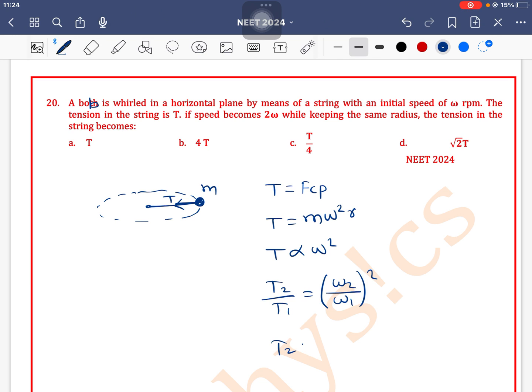So T₂ is equal to—omega 2 is 2 omega, omega 1 is omega—squared into T₁ is T. So this will be 4T. Option B is the correct one.